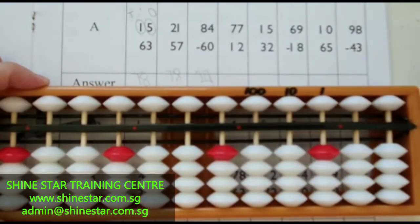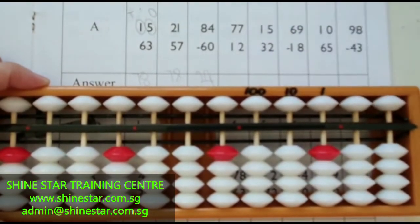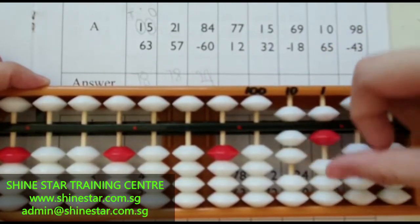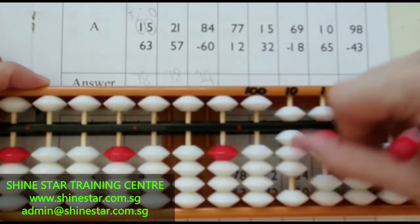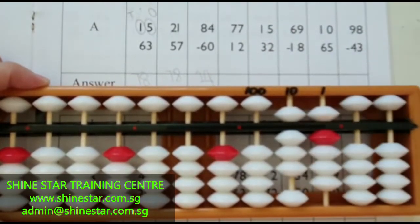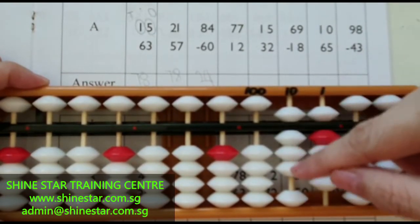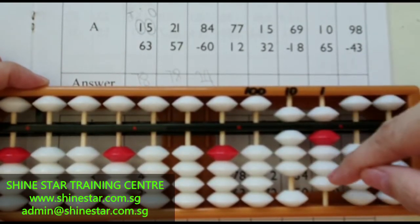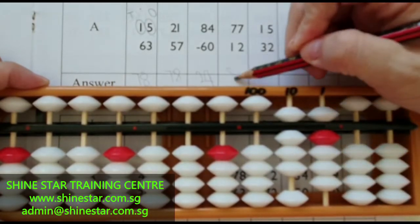Next: seventy-seven plus twelve. Fifty, sixty, seventy, five, six, seven. Plus twelve — ten and two. The answer is fifty, sixty, seventy, eighty, five, six, seven, eight, nine. Eighty-nine.